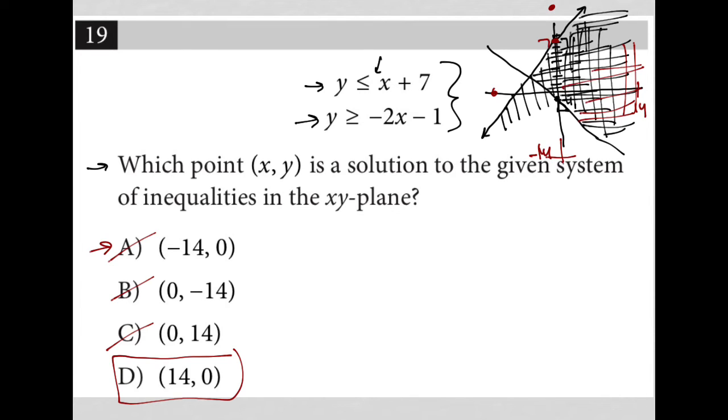Another way to solve this, however, would be to plug in answers. So I can plug in answer choices and I can take each of these and say, if x is negative 14 and y is 0, can I take those values and plug them into both things, and what I get ends up being true. If I do, then that makes it the right answer.